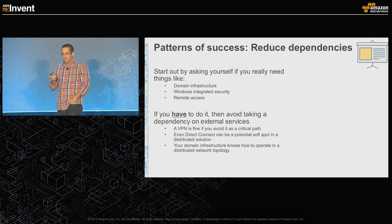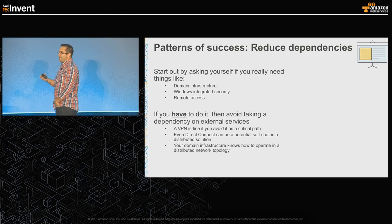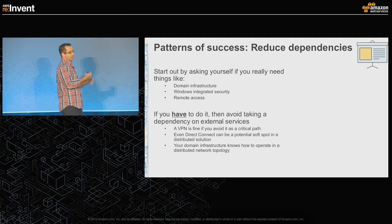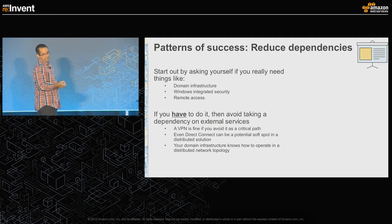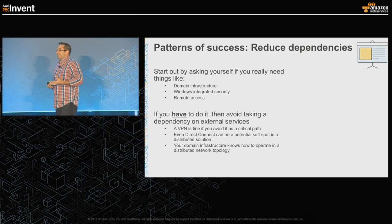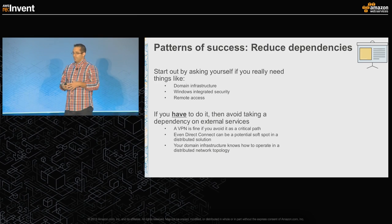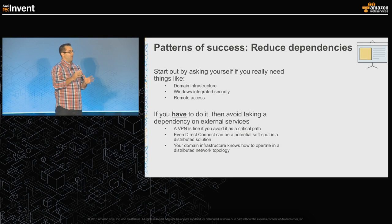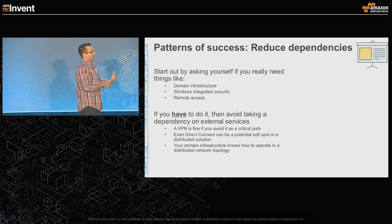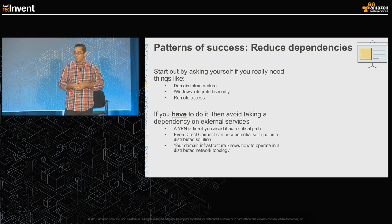Patterns of success: reduce dependencies. You may not recognize where dependencies have crept into your solution architecture — domain infrastructure, Windows integrated security, remote access. Those are all dependencies you've taken on with your deployment. As you do iterations and versions, all these dependencies can become a challenge. So reduce them whenever possible.